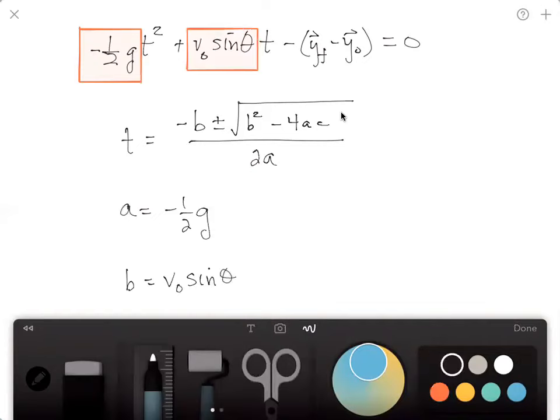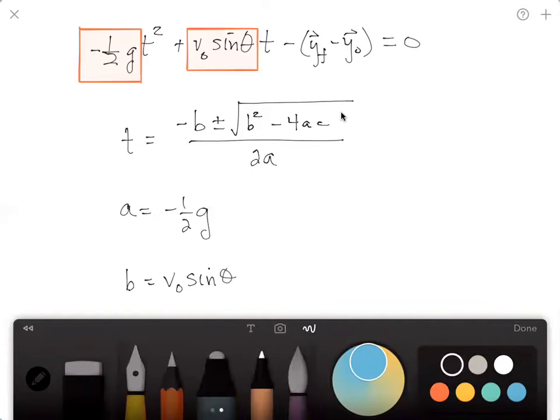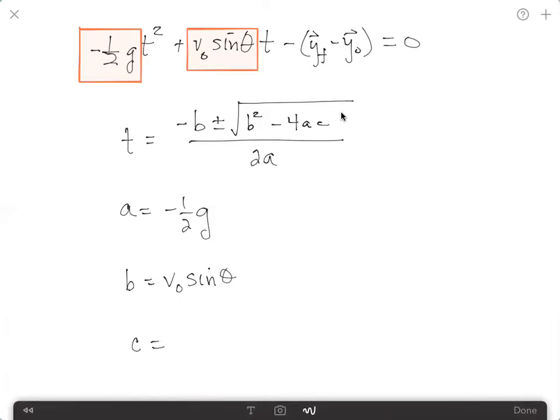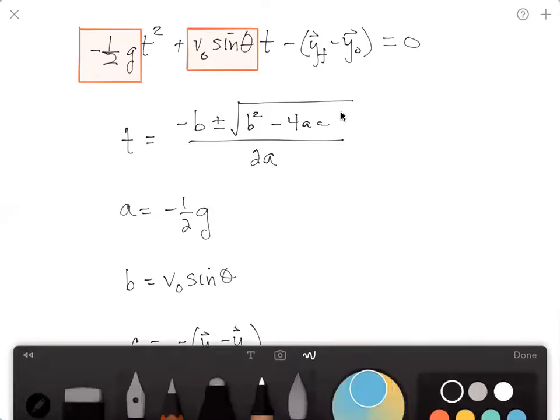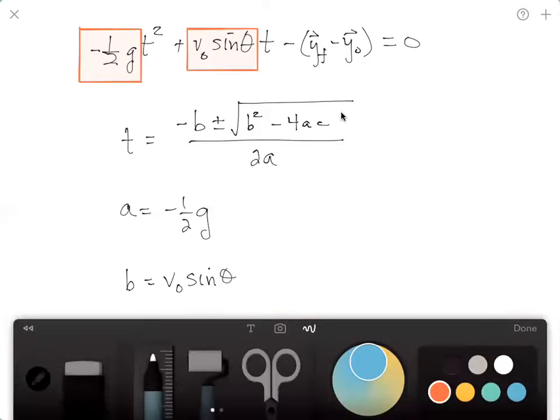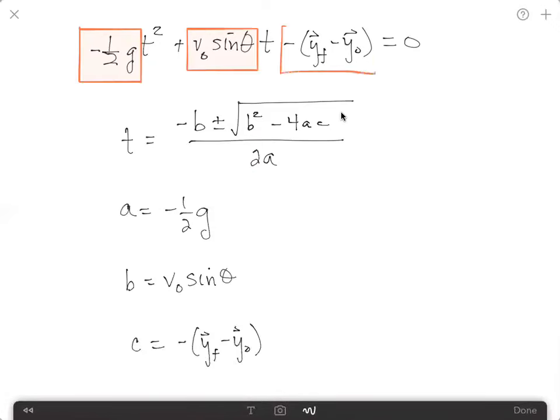And then we have c is just equal to negative y_f minus y_initial. And of course, that value can be found in this equation right here.